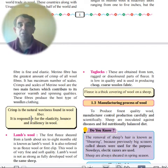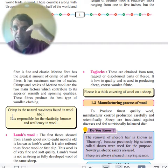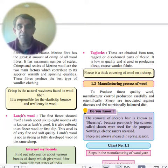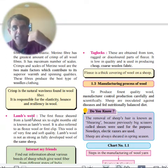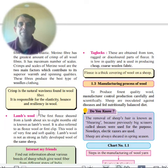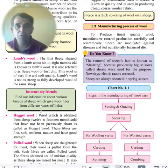Crimp refers to the waviness or curviness of the hair fiber. Lamb's wool is the first fleece sheared from a lamb at about six to eight months of age. It is called first clip — very fine and soft but not very strong.